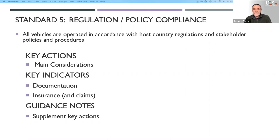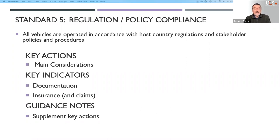Comprehensive insurance is usually recommended beyond the minimum third-party coverage. Indicators to consider include ensuring vehicles have the required documentation, having the right level of insurance cover, and monitoring the number of insurance claims per reporting period. It may also be necessary to purchase additional cover to supplement local insurance, above all ensuring an organization's liability is sufficient to cover drivers, passengers, and third parties.